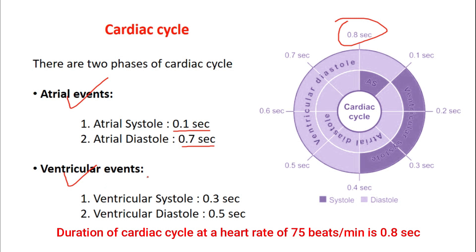In ventricular events, ventricular systole is 0.3 second and ventricular diastole is 0.5 second. So the total of these atrial events and ventricular events is 0.8 second.